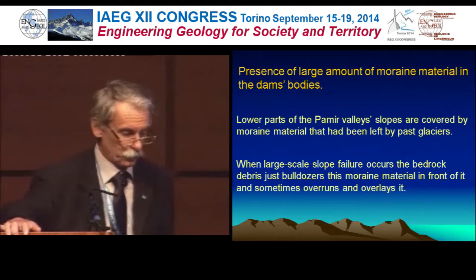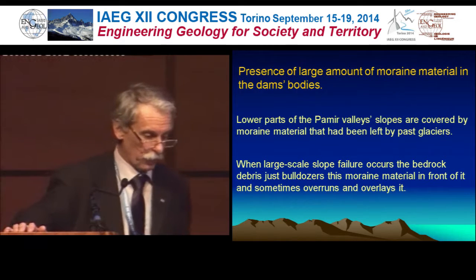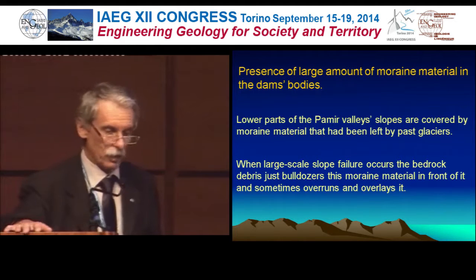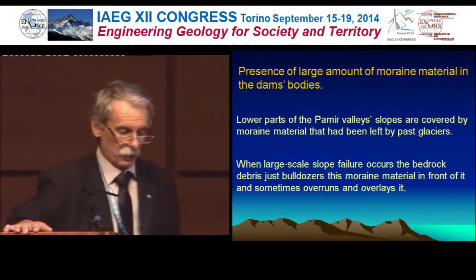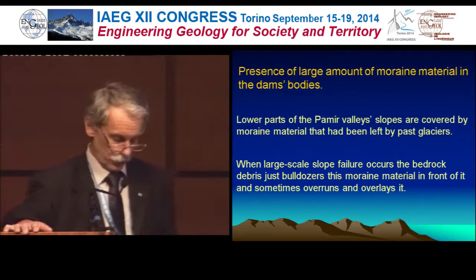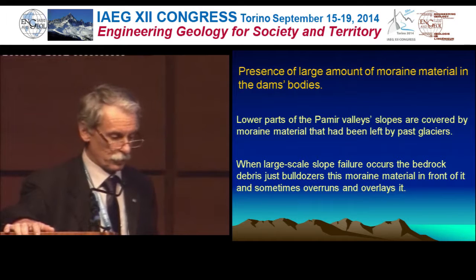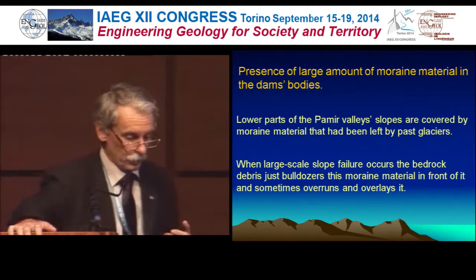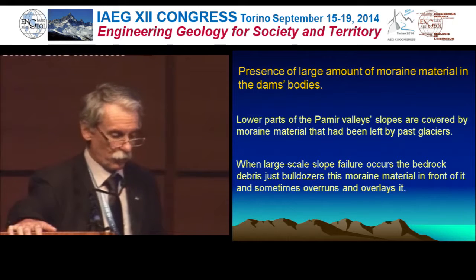Now let's discuss the presence of large amounts of moraine material in the dam bodies. Indeed, large parts of valley slopes — the lower parts, especially in Pamirs and southern Tianshan — are covered, somehow pasted, by moraine material left by past glaciers. When large-scale slope failure occurs, the bedrock debris bulldozes this moraine material in front of it and sometimes overruns and overlays it.